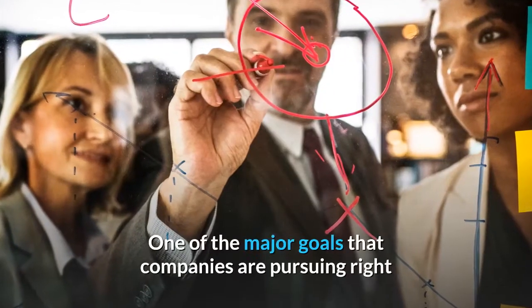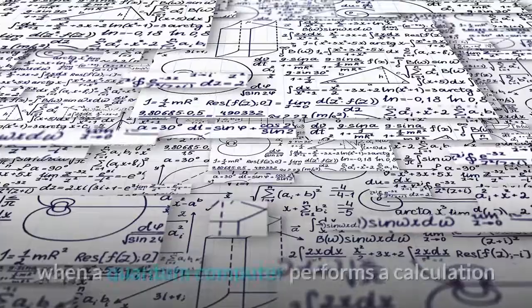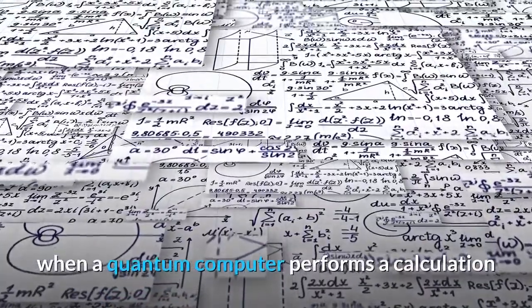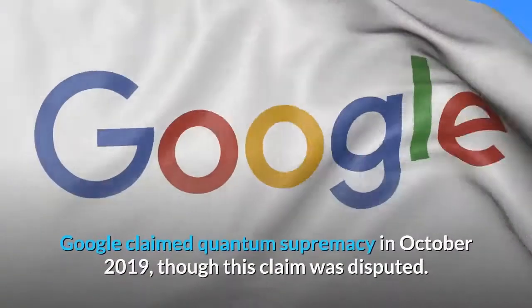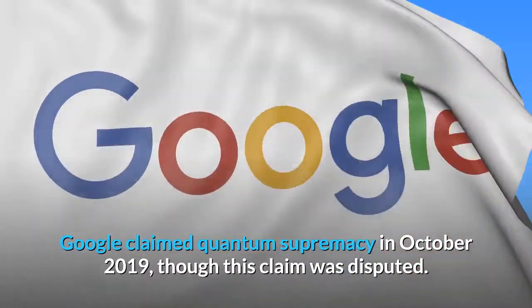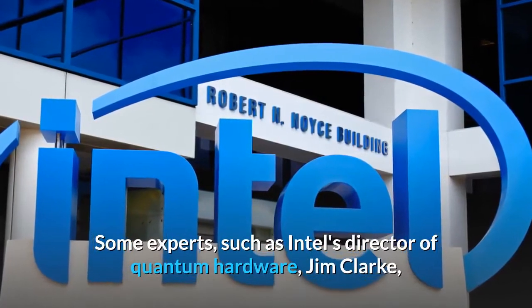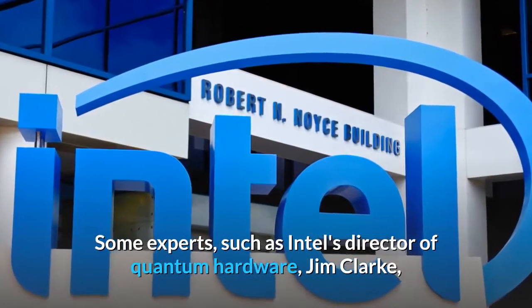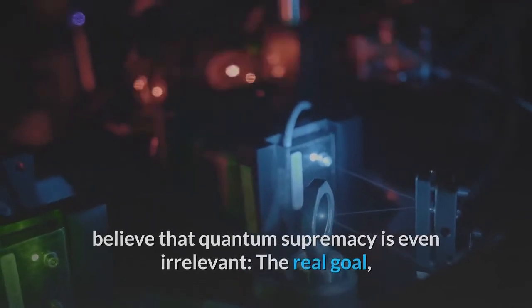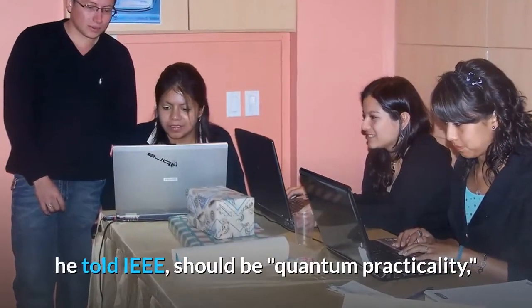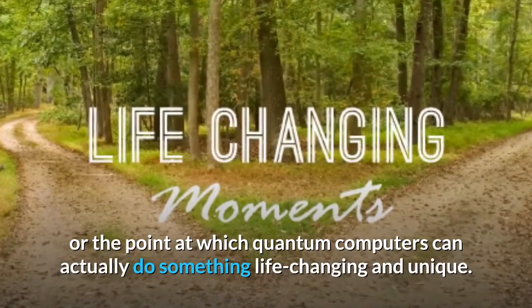One of the major goals that companies are pursuing right now is what is known as quantum supremacy, which occurs when a quantum computer performs a calculation that no classical computer can perform in a reasonable amount of time. Google claimed quantum supremacy in October 2019, though this claim was disputed. Some experts, such as Intel's director of quantum hardware, Jim Clark, believe that quantum supremacy is even irrelevant. The real goal, he told IEEE, should be quantum practicality, or the point at which quantum computers can actually do something life-changing and unique.